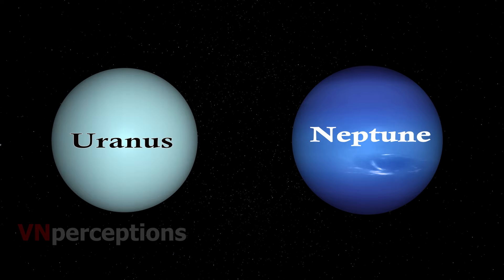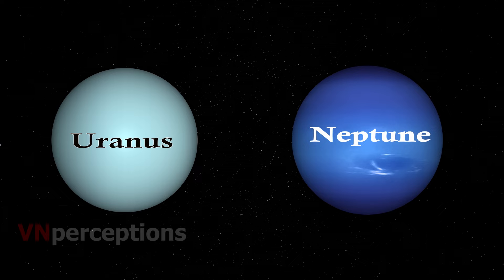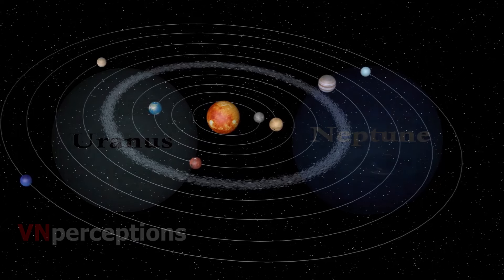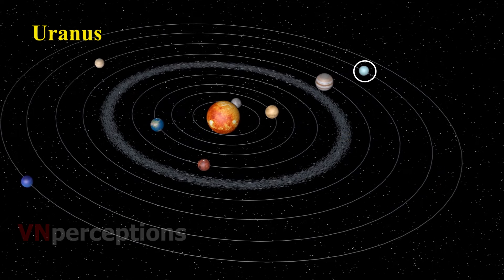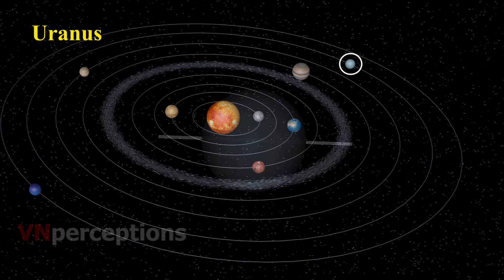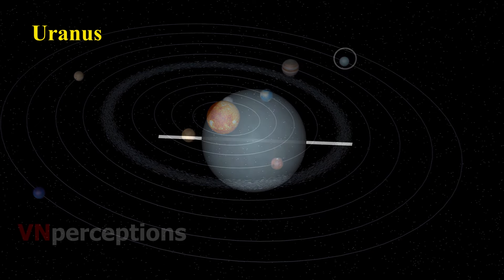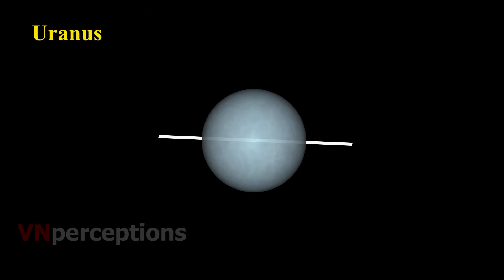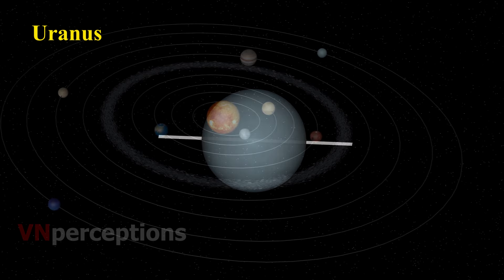Then it is Uranus and Neptune. These are the outermost planets of the solar system and they can be seen only with the help of large telescopes. Uranus is the seventh planet from the Sun. Like Venus, Uranus also rotates from east to west. The most remarkable feature of Uranus is that it has highly tilted rotational axis. As a result, its orbital motion appears to roll on its side.